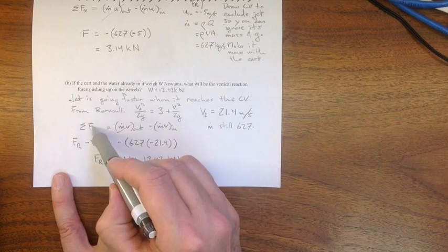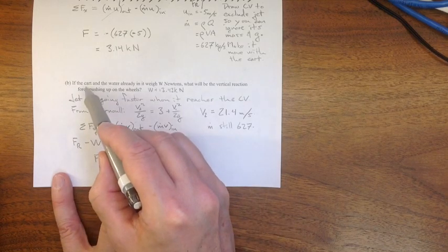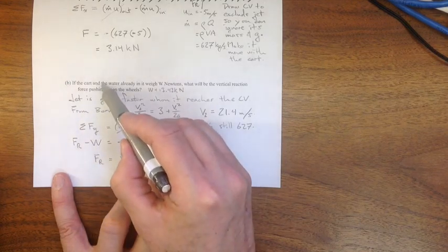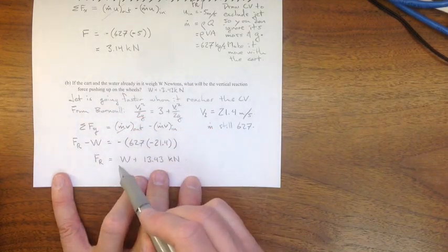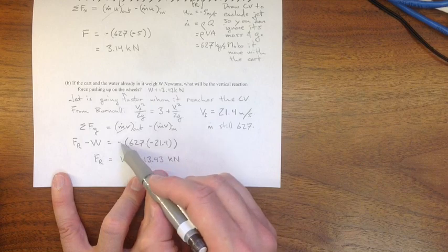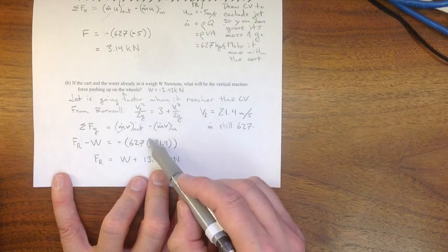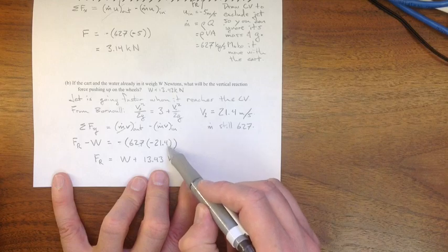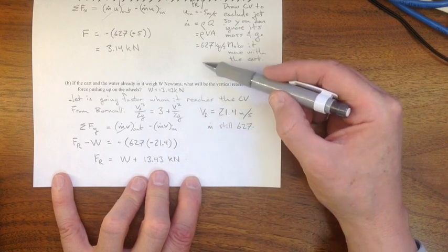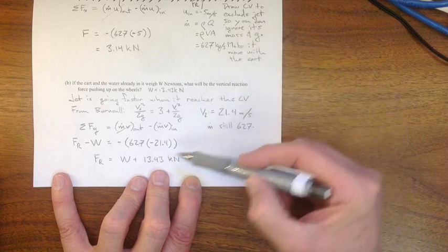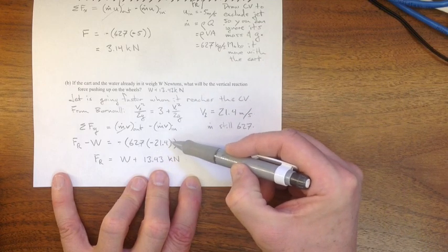The forces acting on the cart are FR in the positive y direction, and W, the weight in the negative y direction. And that's got to be equal to negative M dot 627 times the component of velocity in the positive y direction. The jet's going down, so that's negative 21.4.